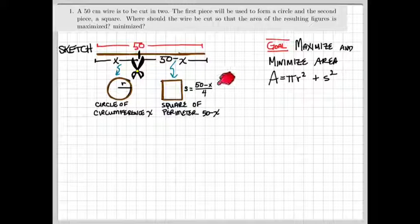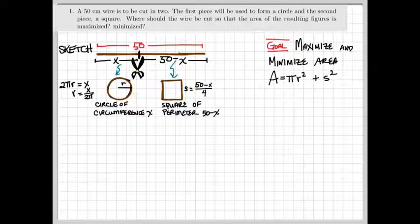The side of the square is in fact 50 minus x divided by 4. To determine what r is in terms of x, remember to determine the circumference of a circle. That's 2 pi r. That's got to equal x, so r itself is going to be x divided by 2 pi.